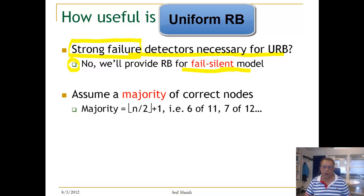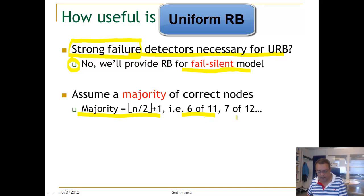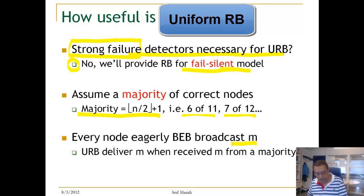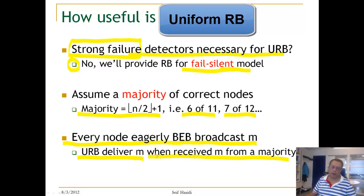Here we are going to use the notion we discussed initially in the course: the idea of using quorums. We will assume a quorum of correct processes — it's a majority of processes. If we have 11 processes, it is 6, and if we have 12, it is 7. The algorithm is very simple. Every node eagerly broadcasts via best-effort broadcast, and it will deliver the message M when it receives the message from a majority of nodes.